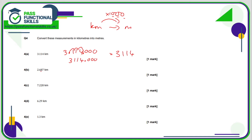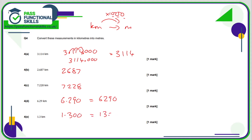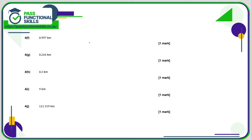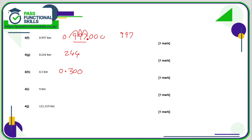If there are three decimal places it's easy — just pull out the decimal point: 2687 meters, 7228 meters. 6.29 can be written as 6.290, so that's 6290 meters. 1.3 kilometers is 1.300, which is 1300 meters. 0.997 — multiplying by 1000, move the decimal point one, two, three positions — gives us 997. So 0.244 kilometers is 244 meters.